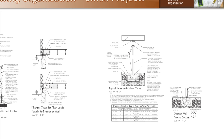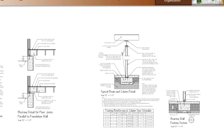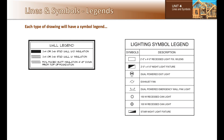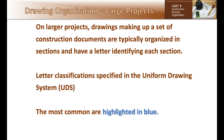On some residential projects the electrical layout may also be included on the floor plan. On larger projects, drawings making up a set of construction documents are typically organized in sections and have a letter identification for each section. These letter classifications are specified in the uniform drawing system.